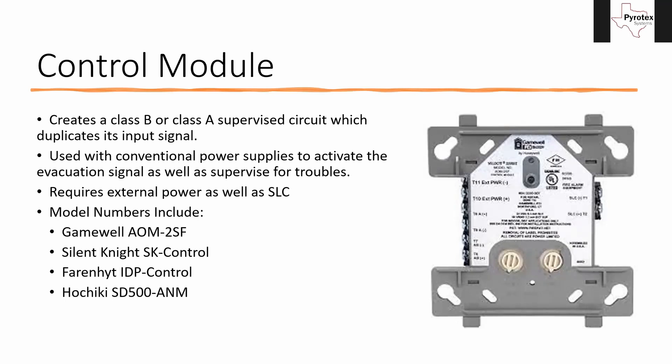We can use it in a high-rise, for example, for speaker circuits — where we hook the amplifier up and send the wire up the riser to hit several different floors. Each floor gets one of these control modules. It comes out of the riser, hits the control module, then goes up to the next floor and hits the next control module, for however many floors that amplifier serves. Coming out of this module, there's a Class B circuit that then controls the speakers for that floor, and it individually supervises it.